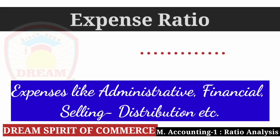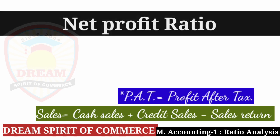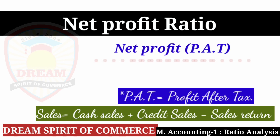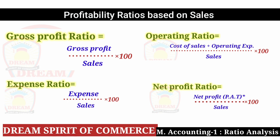Now Expense Ratio: Expense Ratio equals Expense divided by Sales multiplied by 100. The expenses for which we can find Expense Ratio include Administrative, Financial, Sales and Distribution expenses. Now Net Profit Ratio: Net Profit Ratio equals Net Profit — in bracket PAT — divided by Sales multiplied by 100. PAT means Profit After Tax.